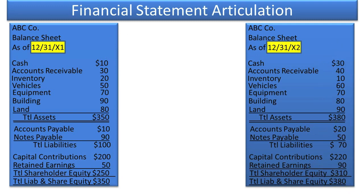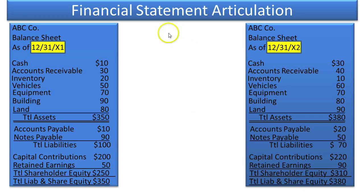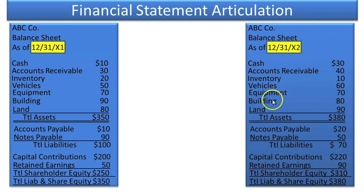Almost every one of these account balances changes because things happen in business — you buy things, sell things, get paid, don't get paid, borrow money. The question for an investor or creditor is: why did these balances change? If you understand why they changed, that might help you evaluate whether this company is successful and healthy, and help you predict what might happen between X2 and X3 — and that's where the real money is.